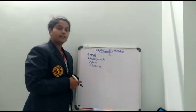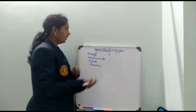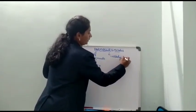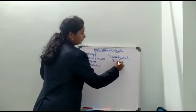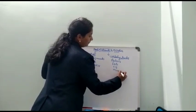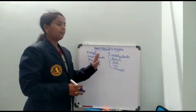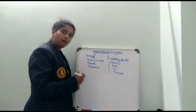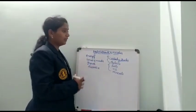Coming to the nutrients, there are five types of nutrients generally present in our food: carbohydrates, proteins, fats, vitamins, and minerals. Apart from these nutrients, water and roughage are also present in food, which help in our digestion and body building.